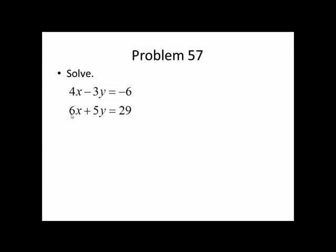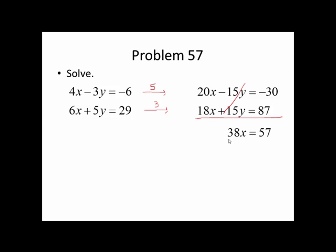We either look for the LCM of 4 and 6, which is 12, and make both of these into some form of 12, or the LCM of 3 and 5 is 15, we can make both of these into 15 y's of some form. I'm going to eliminate the y's because they're already opposite signs. So I'm going to multiply the top equation by 5. That's going to give me a negative 15y. At the same time, I'll multiply the second equation by 3. That will give me a positive 15y, and that will allow me to cancel the variable y. So distribute the 5: 20x minus 15y equals negative 30. Distribute the 3: 18x plus 15y equals 87. Now I can add these two equations together. The y terms cancel. I get 38x equals 57. To finish solving for x, divide both sides by 38.